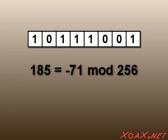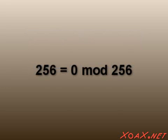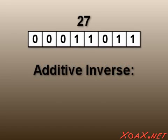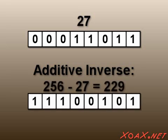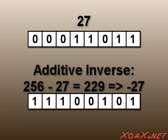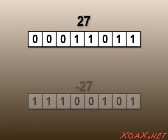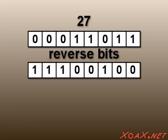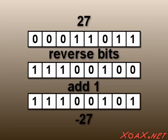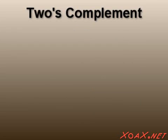This modular equivalence means that all the rules for arithmetic operate the same way. In other words, it doesn't matter to the computer whether the value it is calculating is signed or unsigned. Byte-sized numbers are computed mod 256, so 256 equals 0, and the additive inverse of a number — say 27 — is 256 minus 27, or 229, which is negative 27 in two's complement. You can get the additive inverse of a number by reversing the bits and adding one.